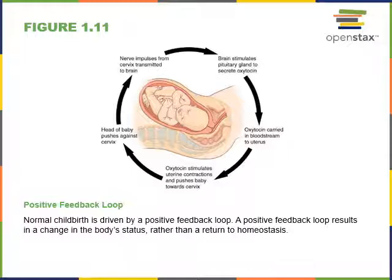The sensors detect stretching of the cervix and transmit that information into the brain. A region of the brain then stimulates the pituitary gland to release the hormone oxytocin. Oxytocin travels through the blood to reach the uterus, stimulating the uterus muscles to contract. As the muscles contract, the baby is pushed towards the cervix, producing further stretching of the cervix. As the cervix stretches more, sensors detect it and send a stronger signal to the brain, stimulating even more oxytocin production and even more uterine contraction.